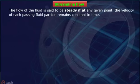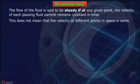The flow of the fluid is said to be steady if at any given point, the velocity of each passing fluid particle remains constant in time. This does not mean that the velocity at different points in space is same.